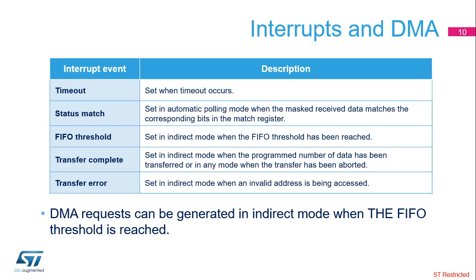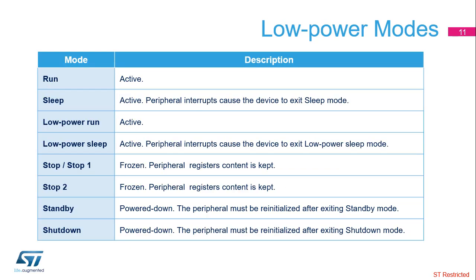DMA requests can be generated in indirect mode when the FIFO threshold has been reached. The OctoSPI is active in run, sleep, low power run, and low power sleep mode. An OctoSPI interrupt can cause the device to exit sleep or low power sleep mode. In stop one or stop two modes, the OctoSPI is frozen and its registers' content is maintained. In standby or shutdown mode, the OctoSPI is powered down and it must be reinitialized afterward.